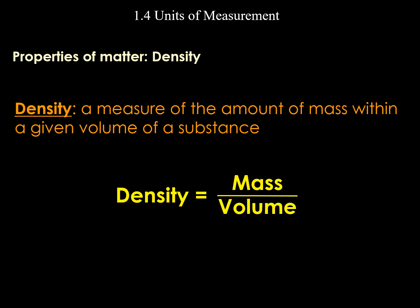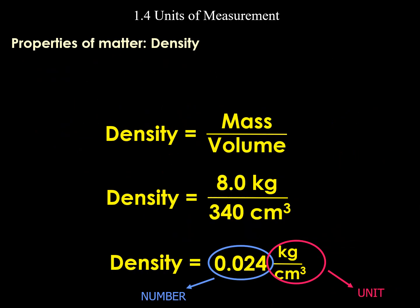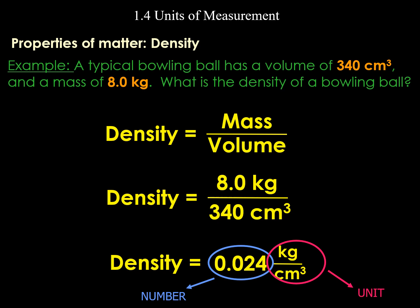Properties of matter — density. Density is a measure of the amount of mass within a given volume of a substance. The formula is: density = mass / volume, or D = M/V. For example: volume = 340 cm³, mass = 8 kg. We apply the formula — density = 8 kg / 340 cm³ = 0.024 kg per cm³. Remember, everything has a number and a unit.